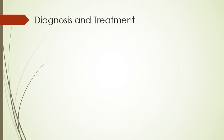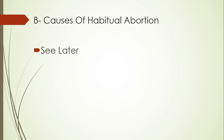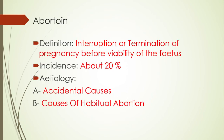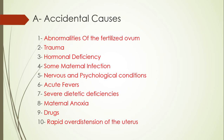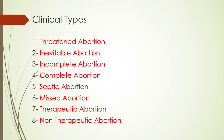Diagnosis, as we discussed, is based on: manifestations of pregnancy, presence of pain, presence of bleeding, condition of the cervix — whether closed or not — and whether the uterine size corresponds to the period of amenorrhea or not. Ultrasound will also differentiate between every type and the other.